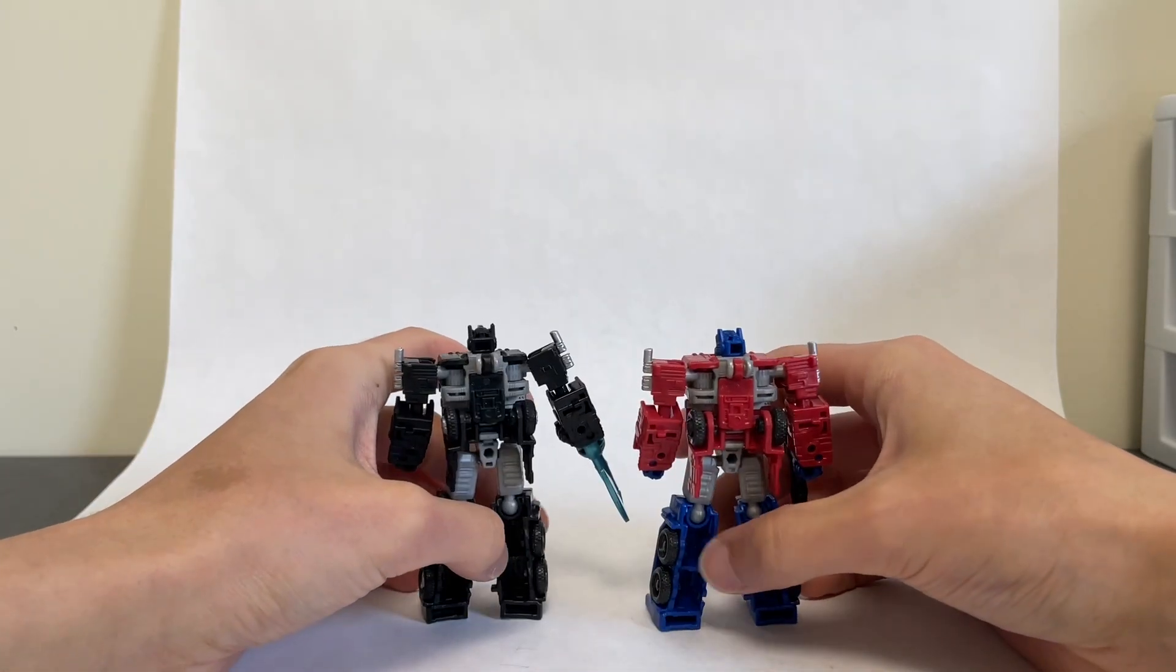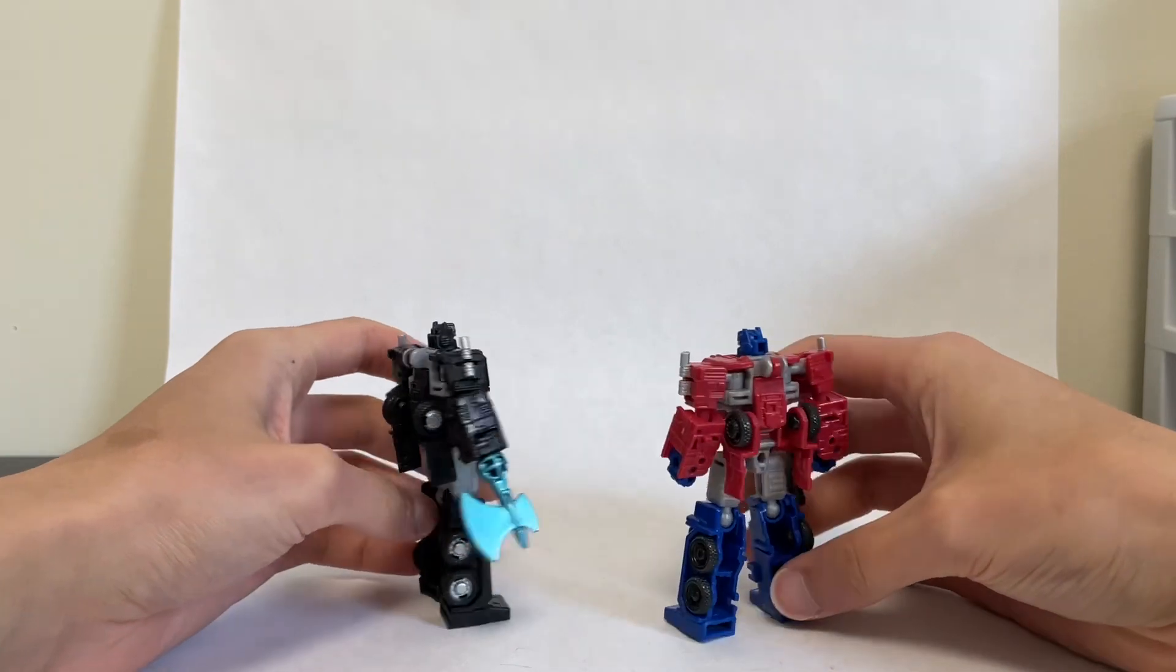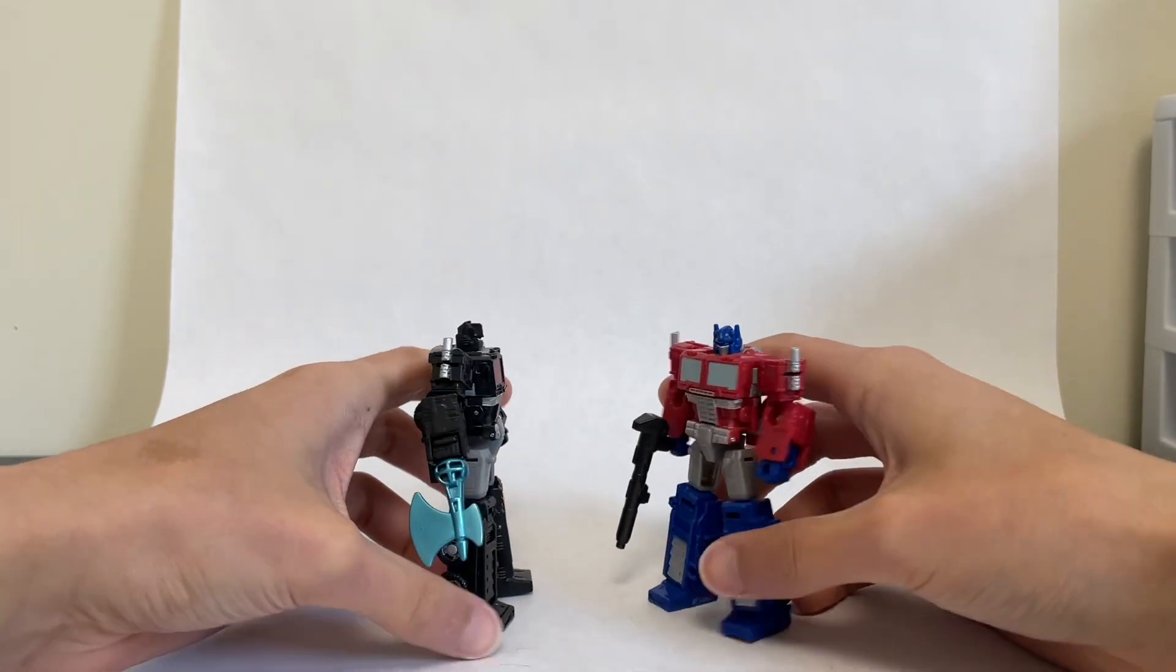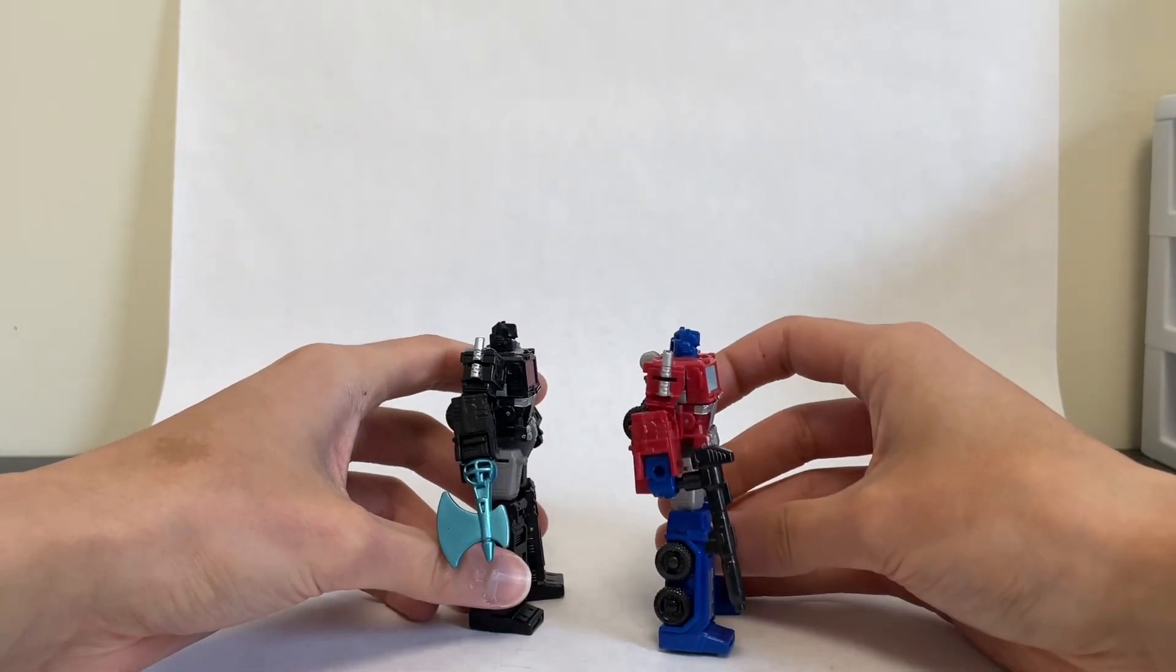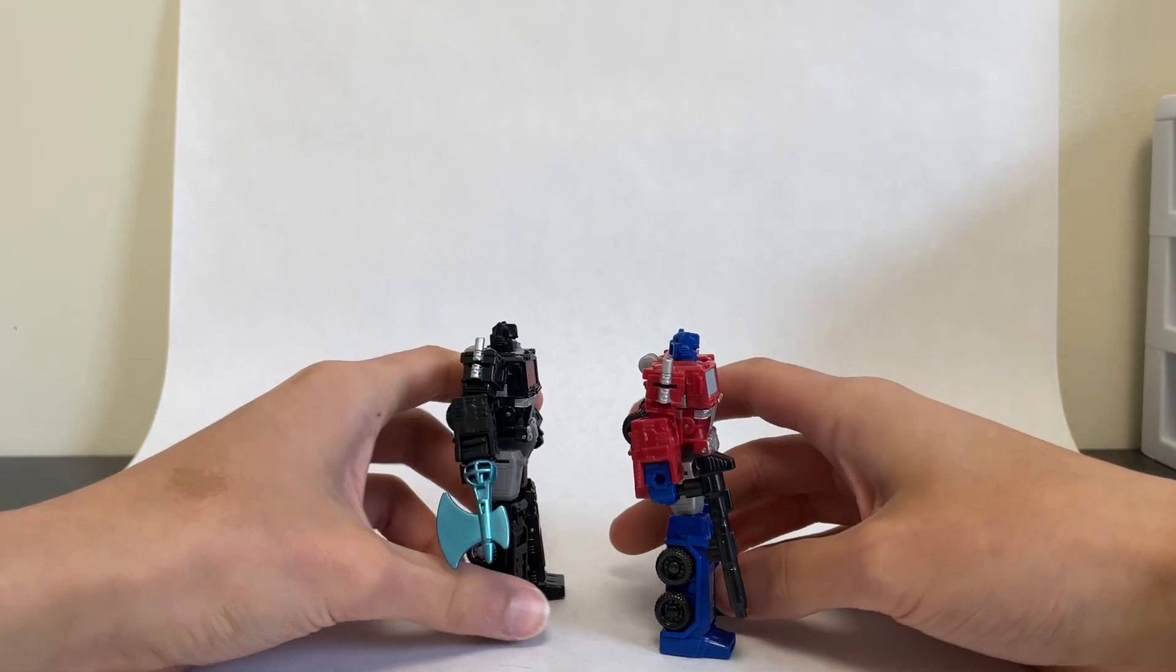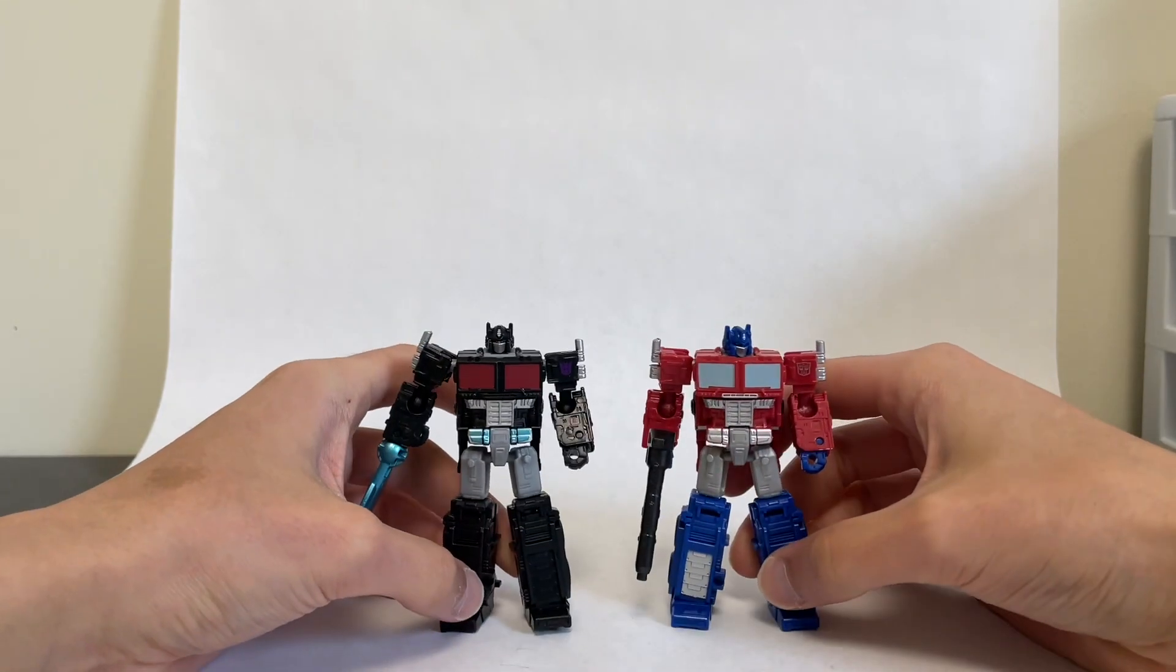So there you go. And of course, the molds are the same. They are identical. But then they do get different weapons, right? So Optimus has his ion blaster and Nemesis has his axe.